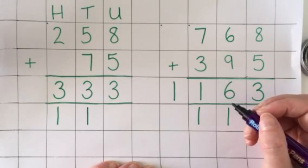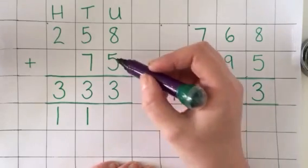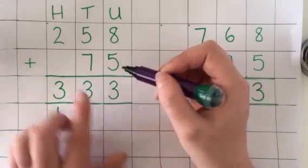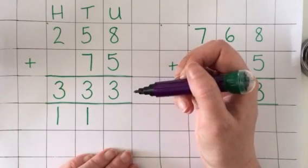The only thing to make sure is that you keep your digits in the correct place value columns. Most errors are made by people incorrectly positioning the numbers to be added.